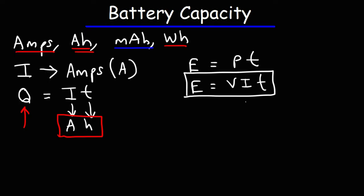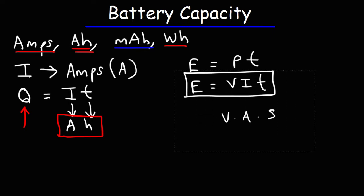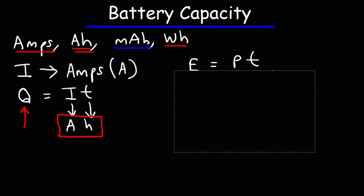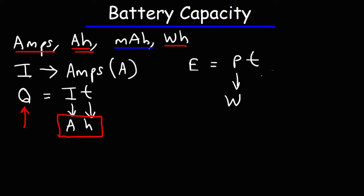Voltage is in volts, current is in amps, time is in seconds. Voltage times current is power, and power is measured in watts. Time in this case could be seconds or hours. So a watt times an hour is basically a unit of energy.